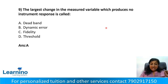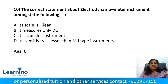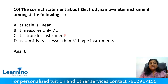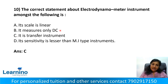Question number 9, the last question of QRS-4. The correct statement about the electrodynamometer instrument is: option A, its scale is linear; option B, it measures only DC; option C, it is a transfer instrument; option D, its sensitivity is lesser than MI type. The electrodynamometer is a transfer instrument — option C is the correct answer.